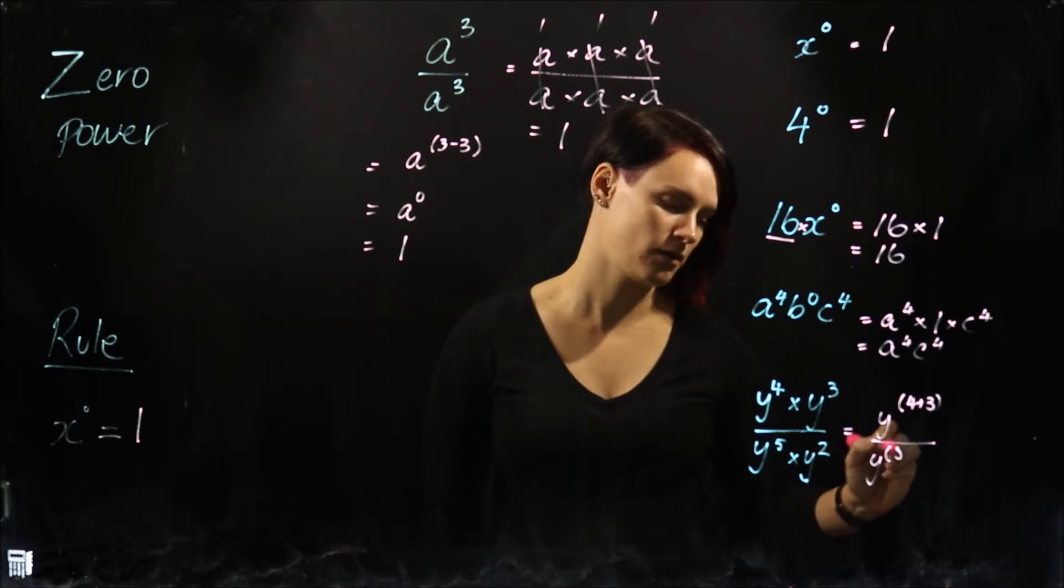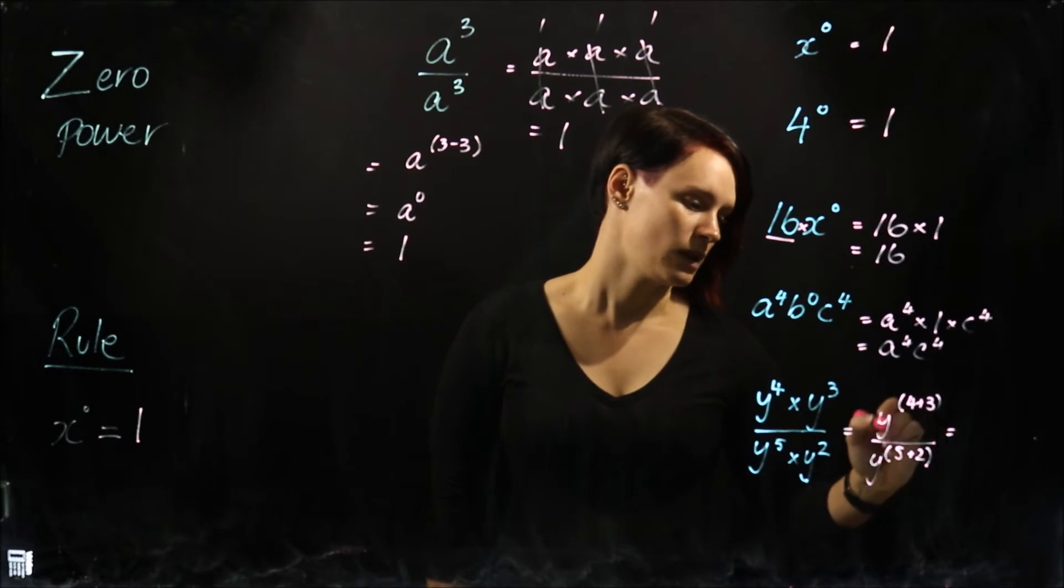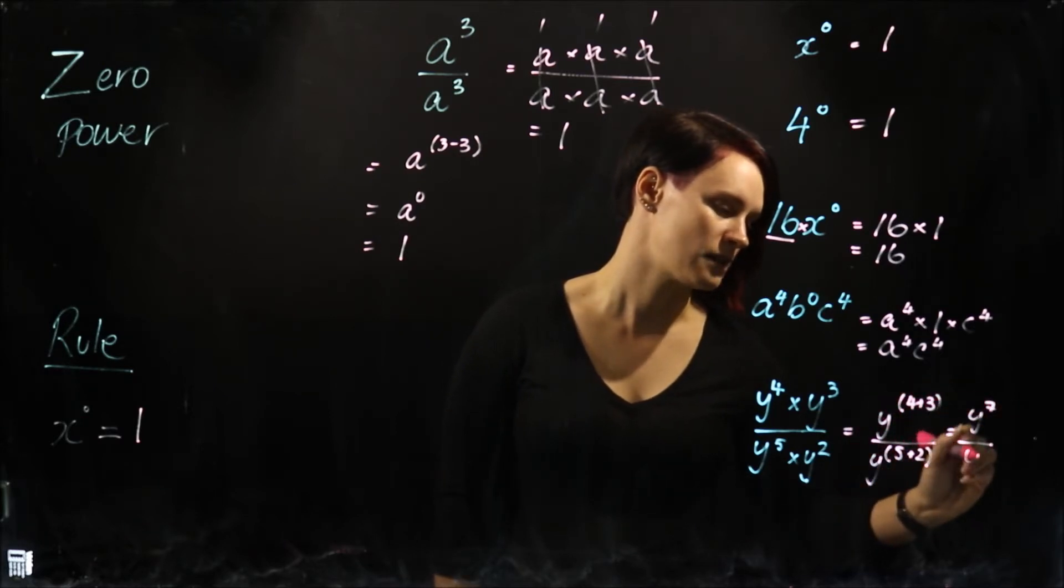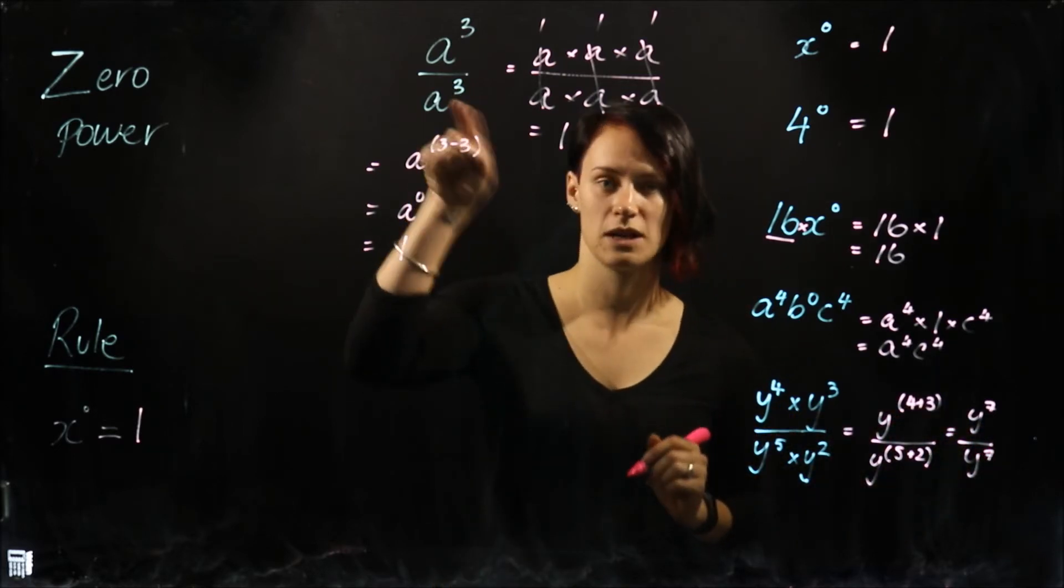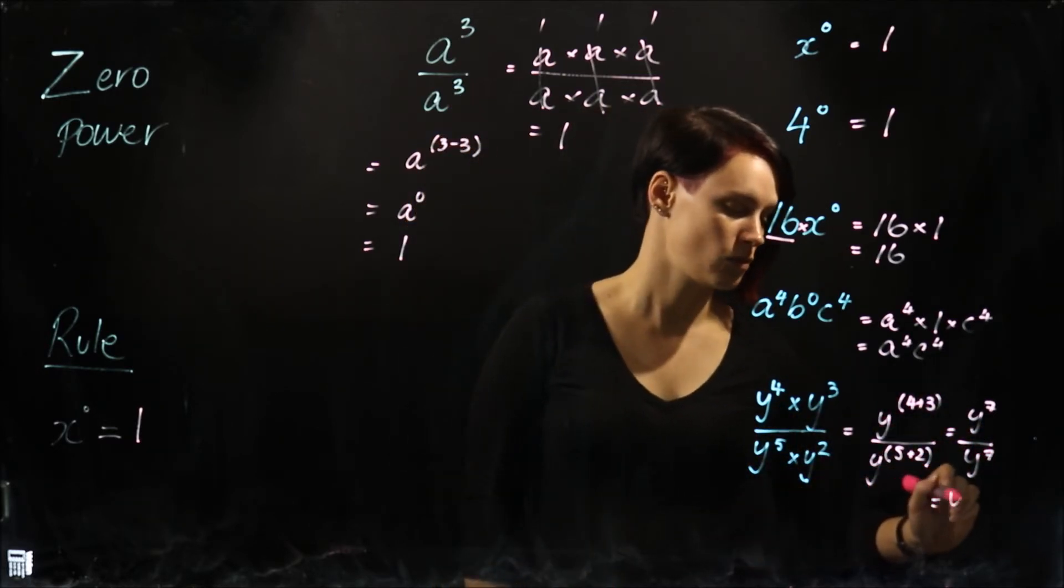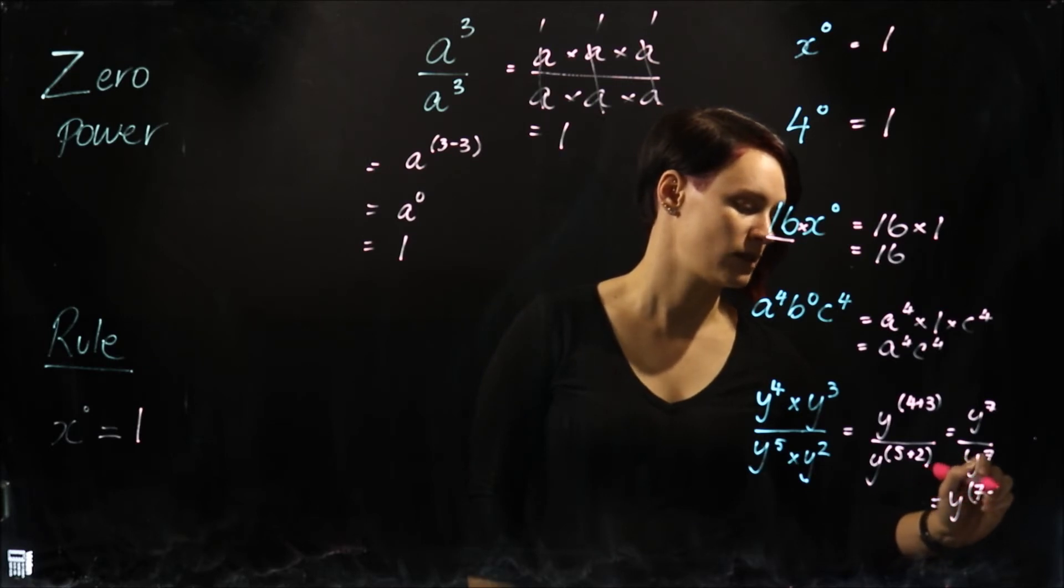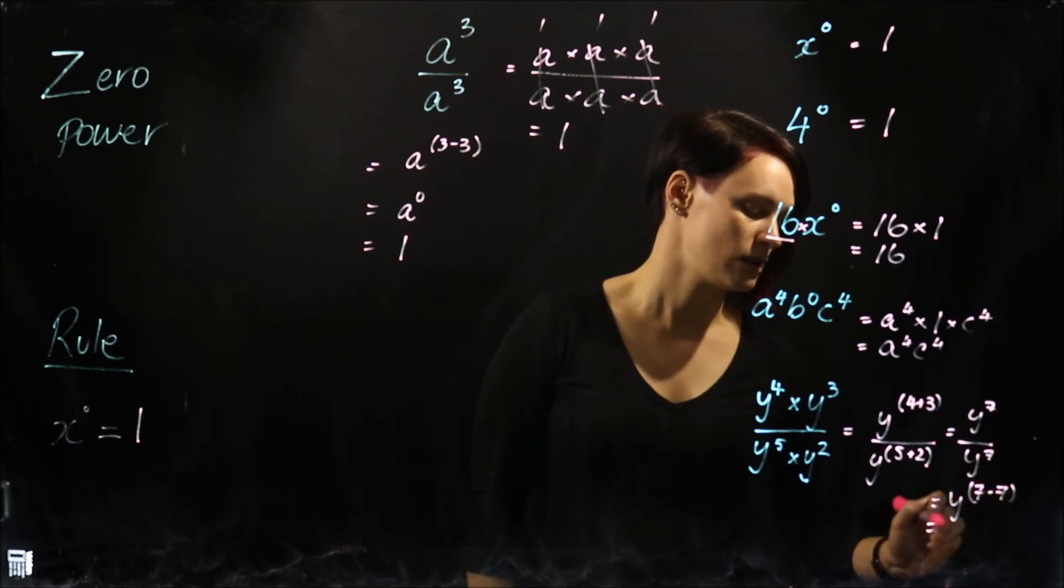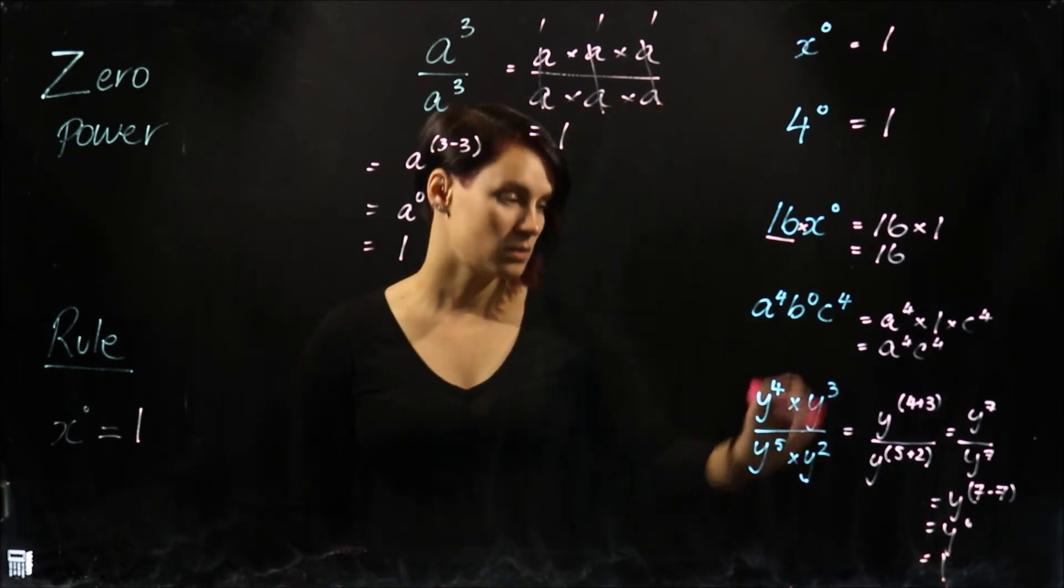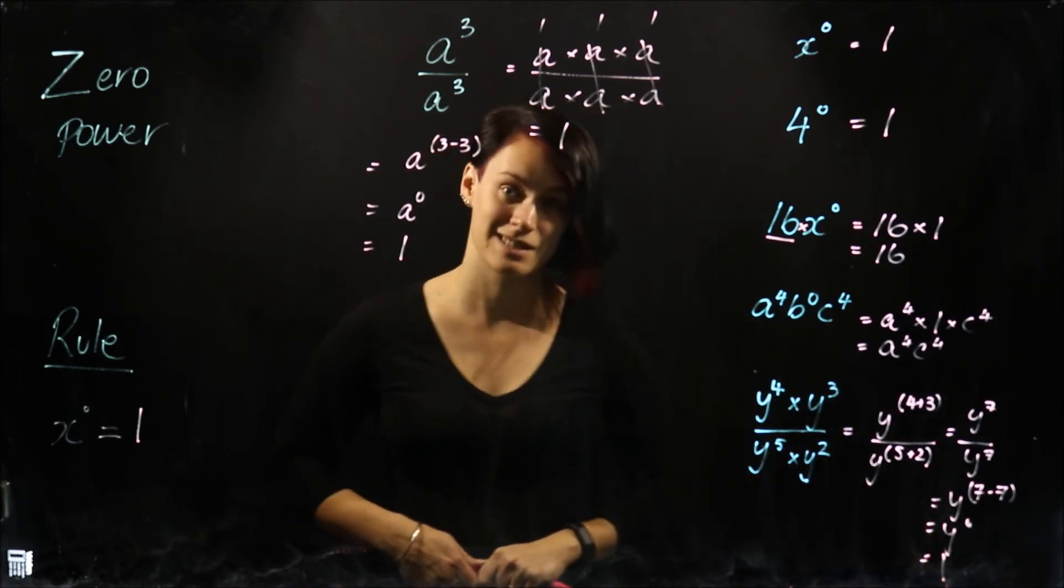So it'll be Y to the power of five plus two. We are then left with Y to the power of seven divide Y to the power of seven. And we're in the same situation that we were in here. What we've got is if we use our subtraction rule, Y to the power of seven take seven, which is Y to the power of zero, which equals one. So all of this together actually equals just the number one.